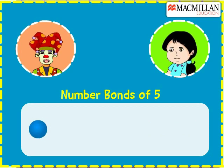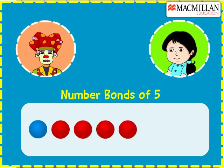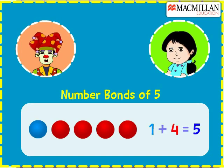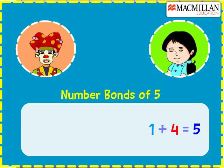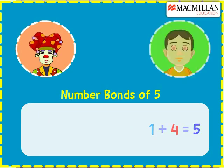You have one blue and four red balls. That means we can also add one blue ball with four red balls to get five balls.